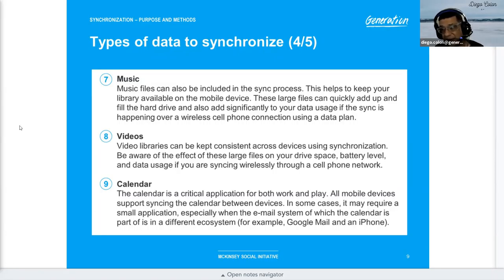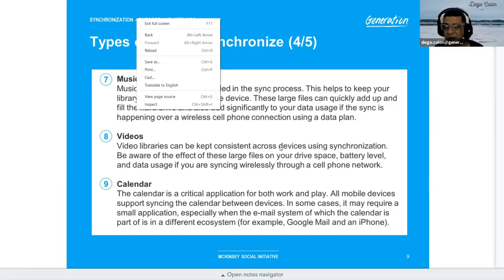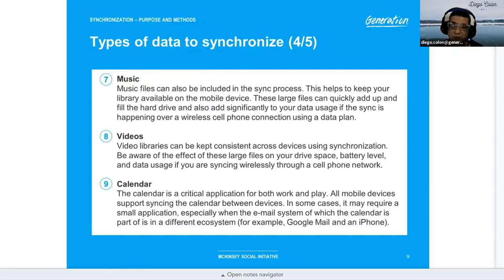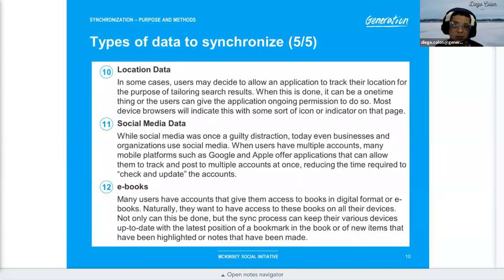Calendar sync is usually done through Outlook or whatever calendar the user is using. Corporate America typically uses Exchange or an Outlook account. For Google Mail or others, you can sync with the phone's native application by manually configuring it. Many Fortune 500 companies use a VPN or other application to access mailboxes and calendars.